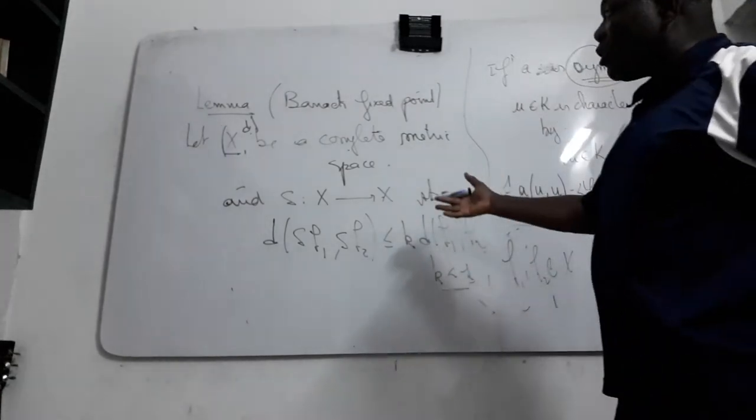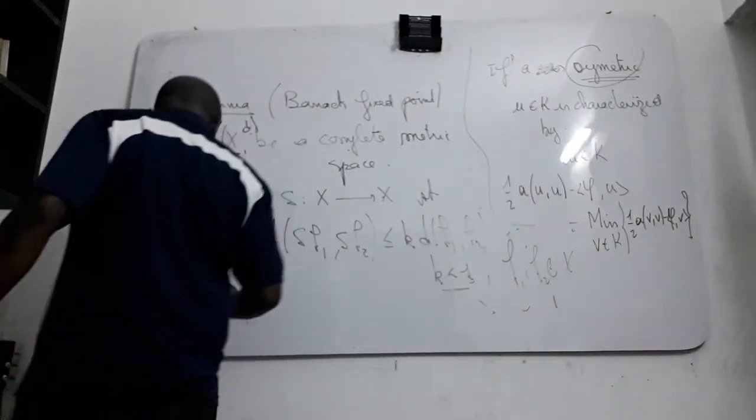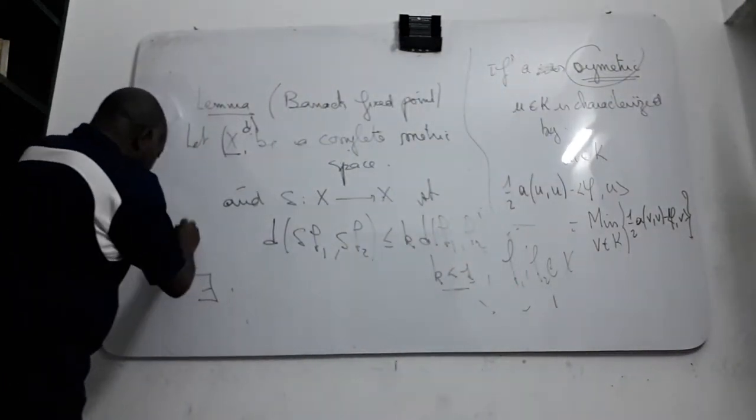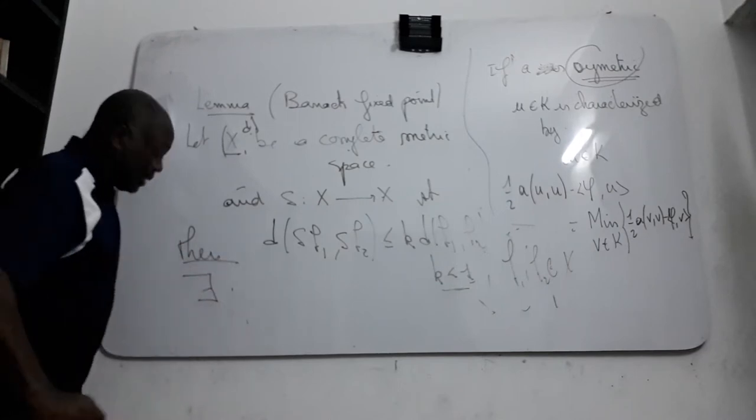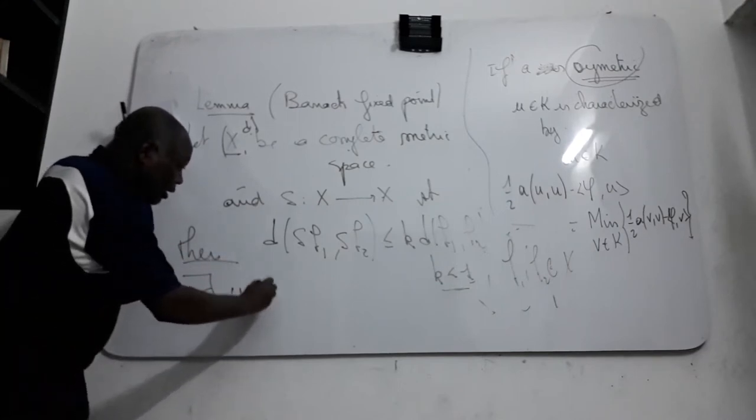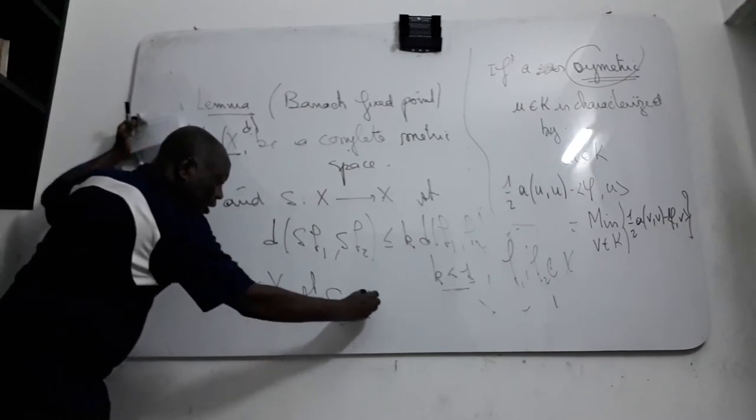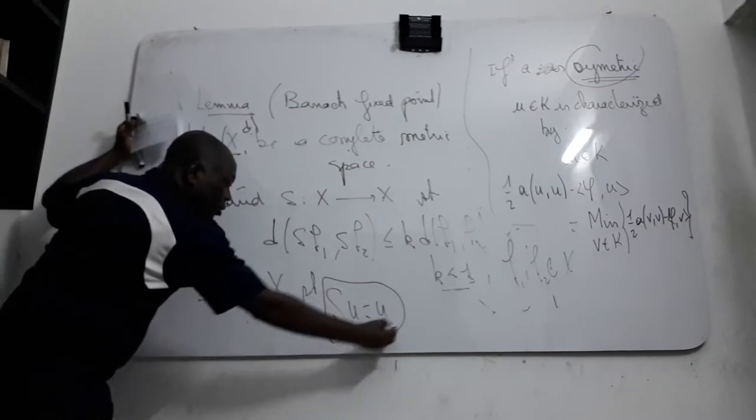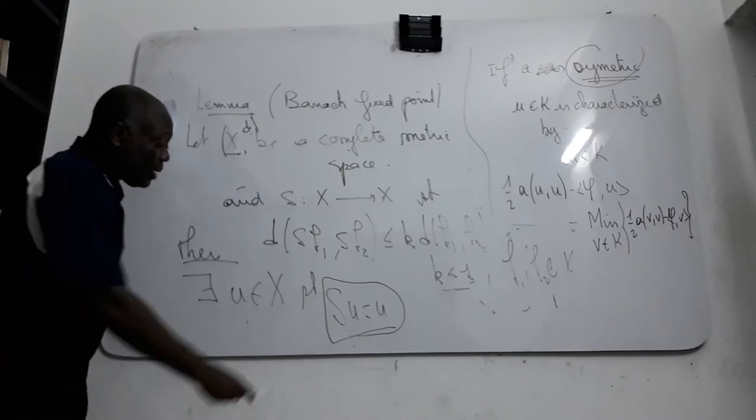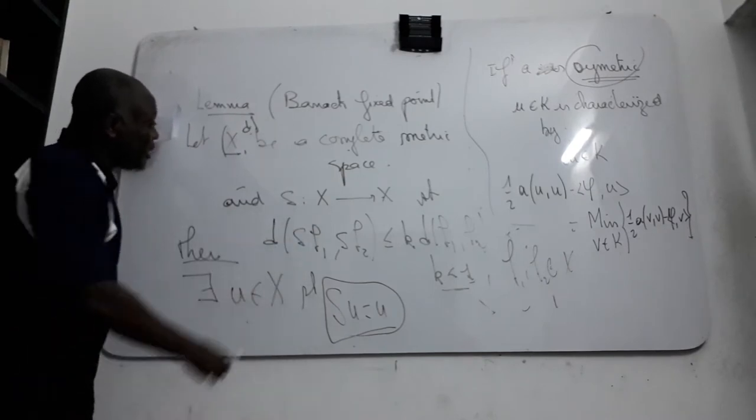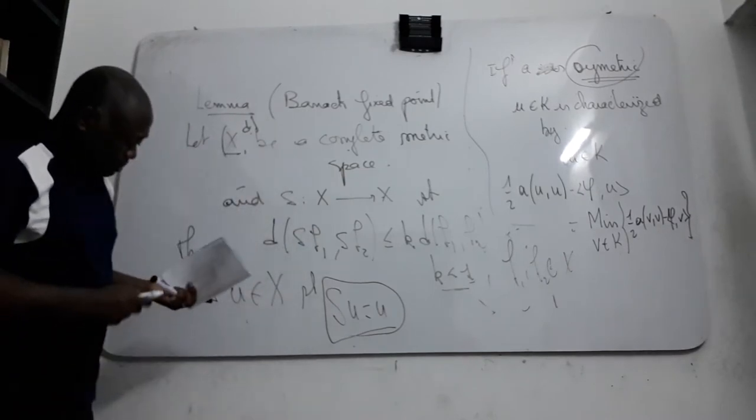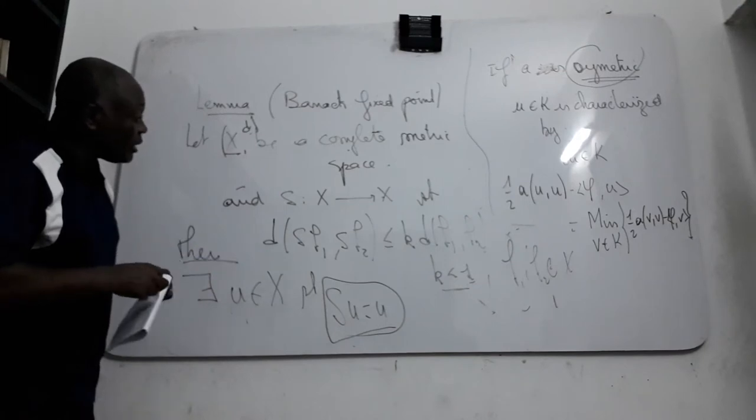If you have this condition, there exists then U in your X such that U is a fixed point by your map defined on this metric space.